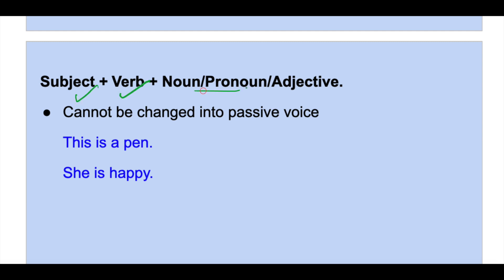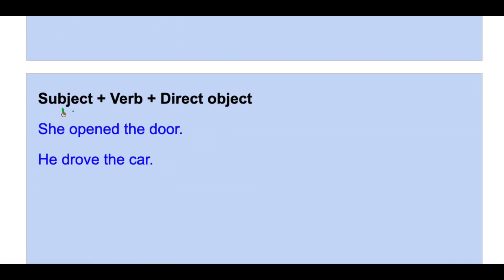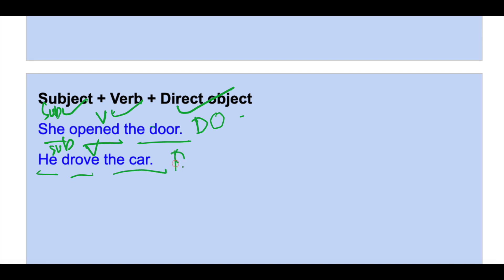Next construction: subject plus verb plus noun or pronoun or adjective. For example: 'This is a pen' — 'this' is subject, 'is' is verb, 'pen' is noun. 'She is happy' — 'she' is subject, 'is' is verb, 'happy' is adjective. Another construction: subject plus verb plus direct object. 'She opened the door' — 'she' is subject, 'opened' is verb, 'the door' is direct object. 'He drove the car' — 'the car' is the direct object.